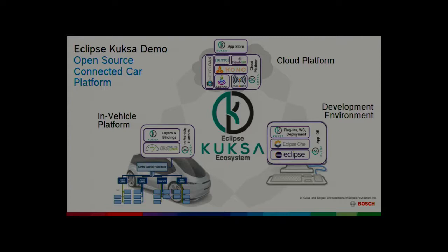In the demo — I've put together a small video — you will first see the rover with a camera driving around it. Then you will see how to build something in Eclipse Che, and it's about adaptive cruise control: a car making sure the distance to the front car is always the same. That will be deployed on the car, and then we'll see the cruise control works. Afterwards you can also steer it over the cloud — forwards, backwards, and things like that.